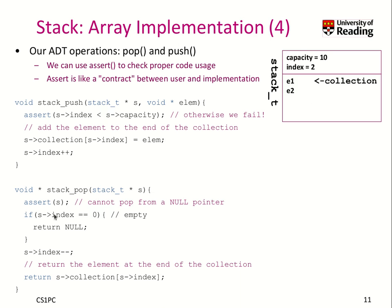When we do a pop operation, we do another check: if the index is zero, we cannot pop something from an empty stack, so we return null — there is no further element on the stack. Otherwise, we decrement the index and return the element at the current position.